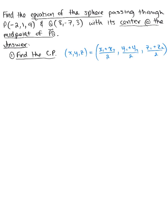Let's label our point P as x₁, y₁, z₁, which equals negative 2, 1, 4. And then point Q is x₂, y₂, z₂, which is defined as 8, negative 7, 3.